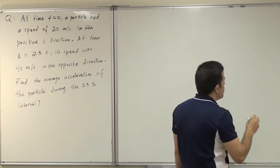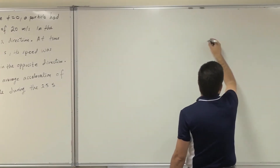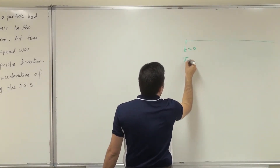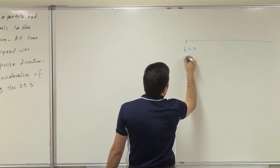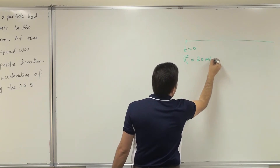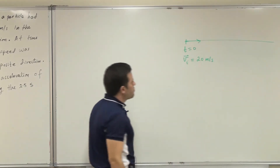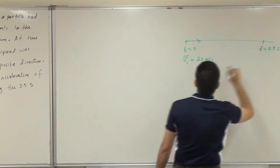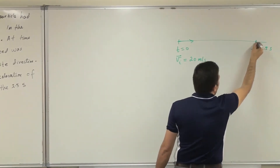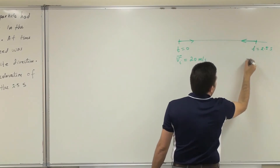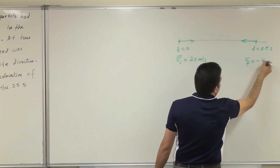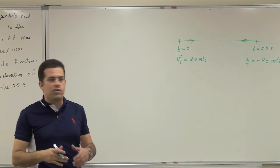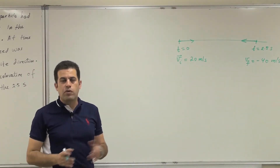I have two conditions for the particle. One is at time equal 0, the speed v-initial equals 20 meters per second in the positive direction. And later on, at t equals 2.5 seconds, the velocity of this particle has an opposite direction, and its value v-final is minus 40 meters per second.